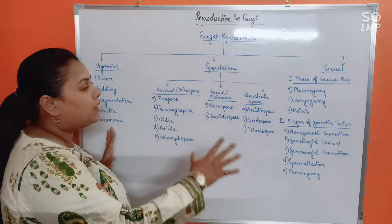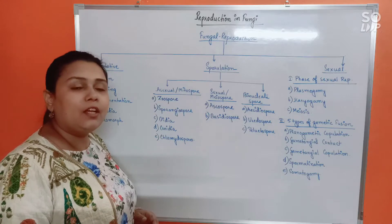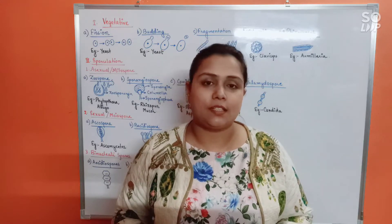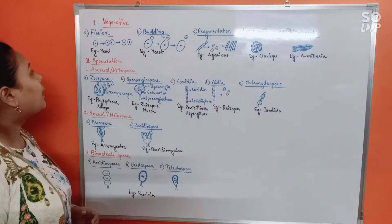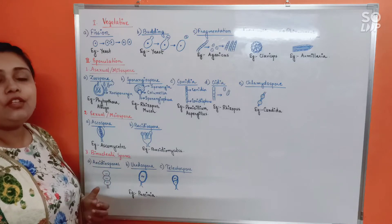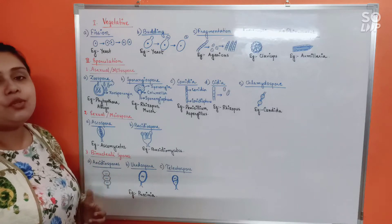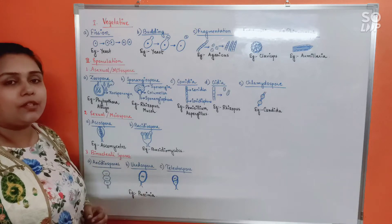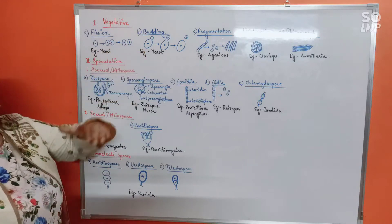First, all of you learn this chart properly, and only then go into the detailed discussion to avoid any confusion. Now let us discuss fungal reproduction in detail. We will start with vegetative mode. Vegetative mode of reproduction means a mode of reproduction in which the parental body or cell would not bear any specialized part prior to reproduction — the somatic cells of the parent will directly give rise to offspring.